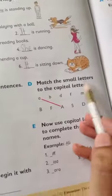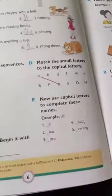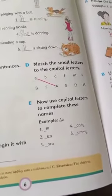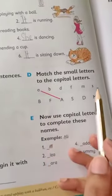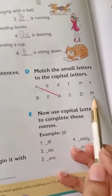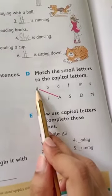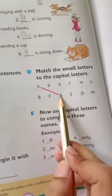They are saying match the small letters to the capital letters. Small letters to capital letters ke saath aapne match karwana hai. Above given are the small letters and these are the capital letters. Small A is matched with capital A.